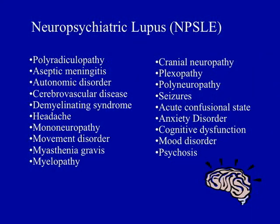That terminology was not very useful for understanding how these syndromes occur or what we can do about them. In 1999, the ACR convened a group of physicians and scientists who came up with a list of 19 defined neuropsychiatric syndromes, along with ascertainment procedures and attribution criteria. Because really the name of the game is attribution — if we're saying something is part of lupus, it must be attributable to lupus, not to medications, infection, or any other problem.